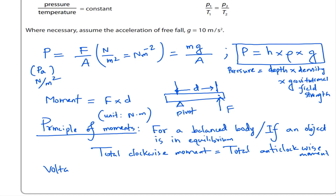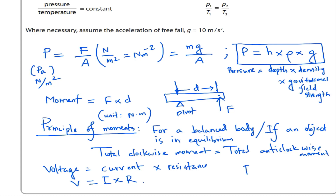Voltage equals current times resistance: V equals I times R. Also, current I equals charge divided by time. The unit of current is ampere, the unit of charge is coulomb, and the unit of time is second — so coulomb per second is also known as ampere.